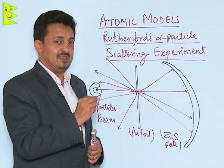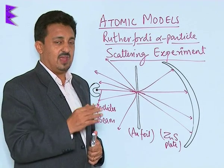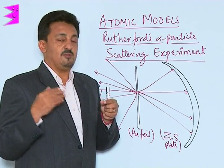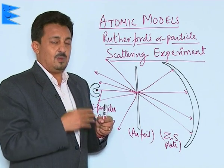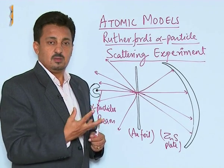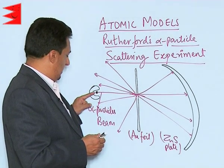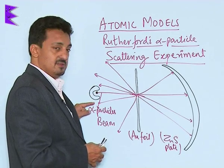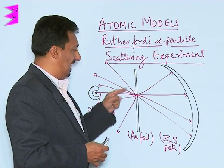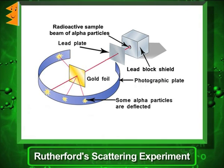Rutherford was studying radioactivity, mainly alpha particle rays, and was trying to find out through how much thickness the alpha particles are able to pass through. He came across very astonishing and different observations. A source of radioactive material in a shield emitted an alpha particle beam, which was allowed to pass through gold foil.